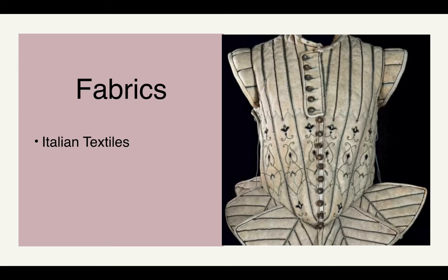At the start of the Renaissance, we primarily see Italian textiles, though the fibers used to create them are imported from all over Europe. A majority of our information on fabrics of this period comes from artworks created during the period. There are huge advancements in painting and sculpting — we see a great attention to anatomy, detail, color, shadow, and light form, giving us a lot of information about what people were wearing. We do have some surviving garments, but artwork gives us a well-rounded view.